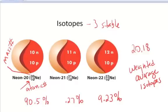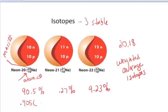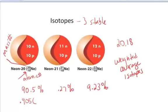So the weighted average would be 90.5%, which is 0.905, times the mass number for neon-20, which is 20, plus